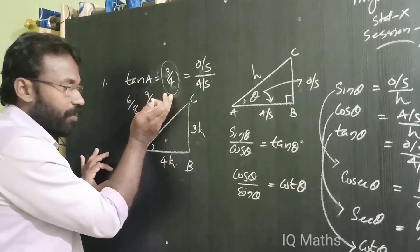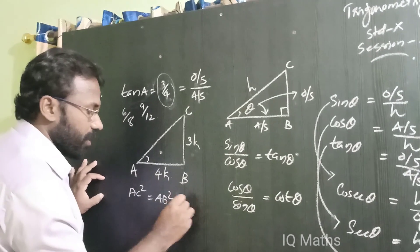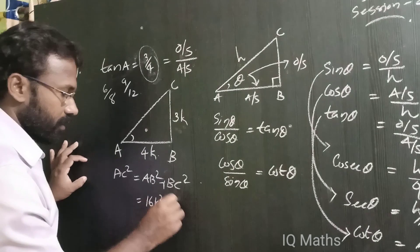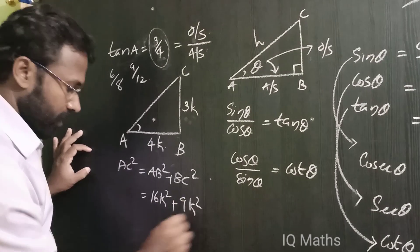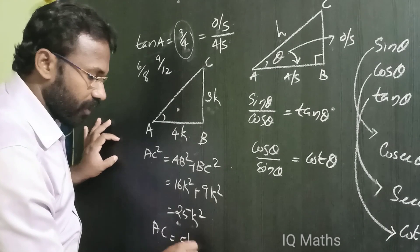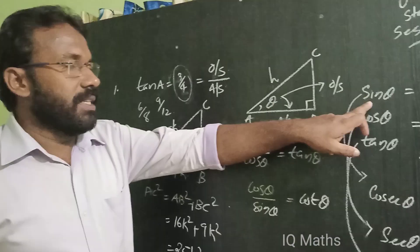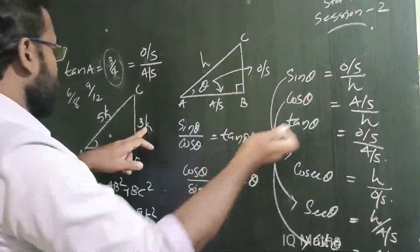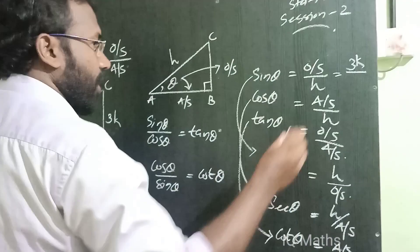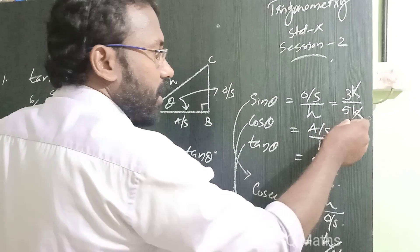By Pythagoras theorem, AC square is equal to AB square plus BC square. So AC square equals 4k squared plus 3k squared — that is 16k square plus 9k square — equal to 25k square. We can say AC is equal to root of 25k square, that is 5k. So sin theta is equal to opposite side by hypotenuse, that is 3k by 5k, giving sin theta equal to 3 by 5.